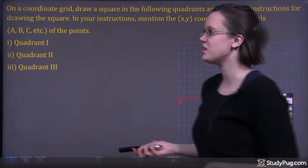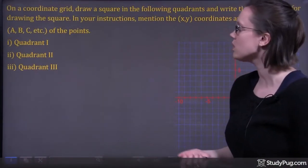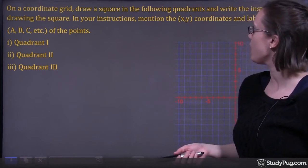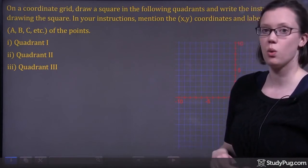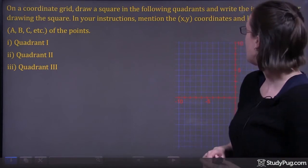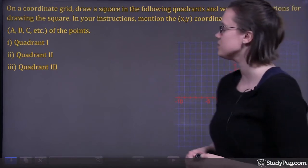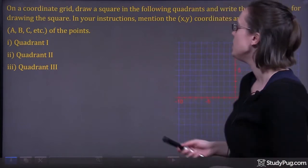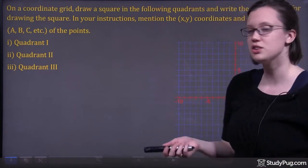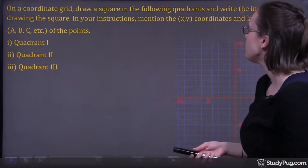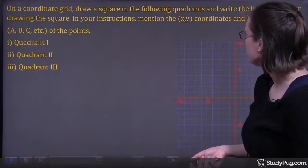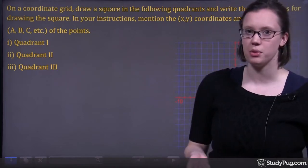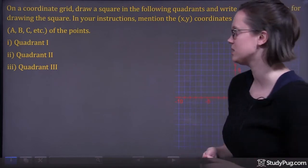Let's take a look at this question. On a coordinate grid, we're going to draw a square in the following quadrants, and we're going to write the instructions for drawing the square. In our instructions, we're going to mention the XY coordinates and the labels of the points.